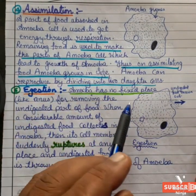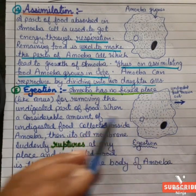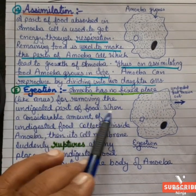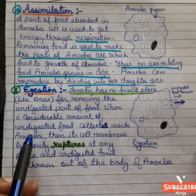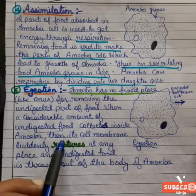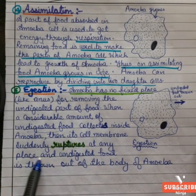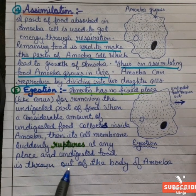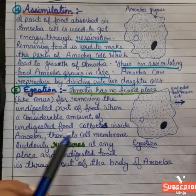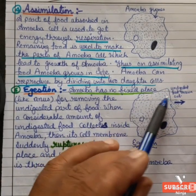Now, after assimilation, undigested food must be removed. Amoeba has no fixed place like an anus for removing waste. When a considerable amount of undigested food collects inside the body of the amoeba, its cell membrane suddenly ruptures at any place, and the undigested food is thrown out of the body.